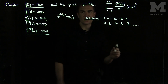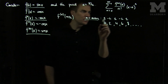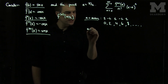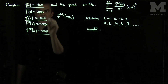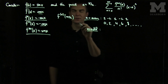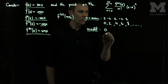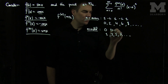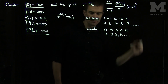So f^n(pi/2) is either 1 or negative 1 when n is even. When n is odd, we have a cosine or negative cosine. Plugging pi over 2 into cosine gives zero, so we get all zeros at n = 1, 3, 5, 7, etc. That pattern is easy to discern — just all zeros.